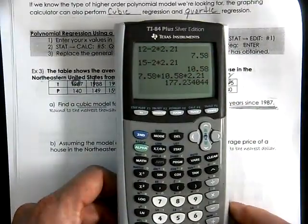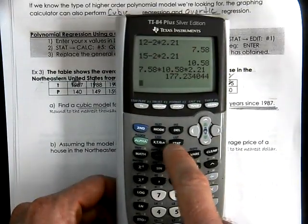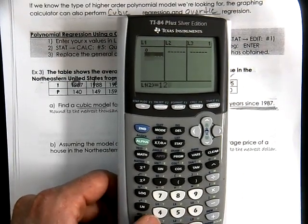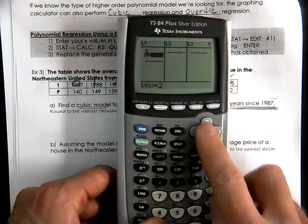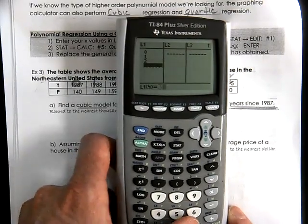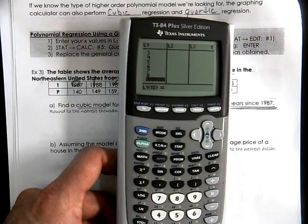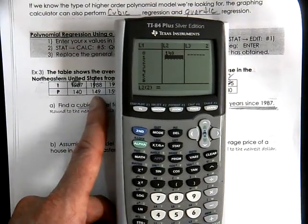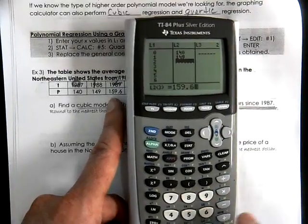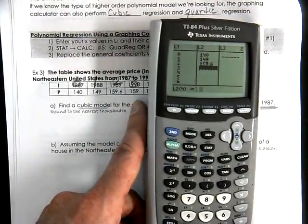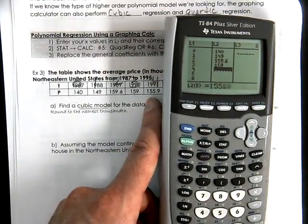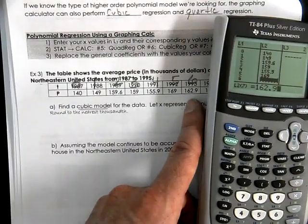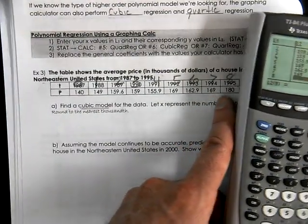So, we come to our calculator. We hit the stats button. You've done this before. Hit the stats button. Click on edit. Type in your X's. Zero. One. Two. Three. Four. Five. Six. Seven. Eight. Then you need to type in all those crazy Y values. 140. 149. 159.6. Don't round it. 159. 155.9. 169. 162.9. 169. And 180.